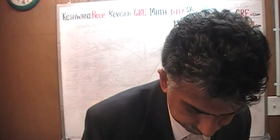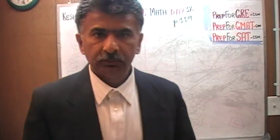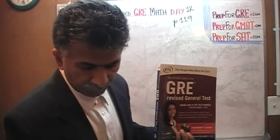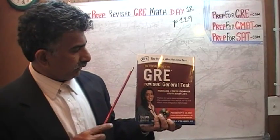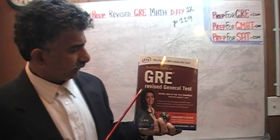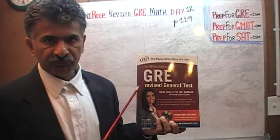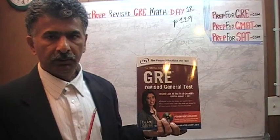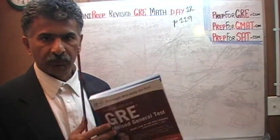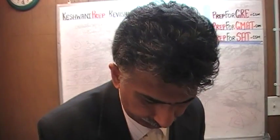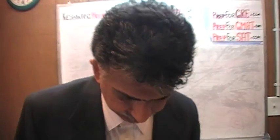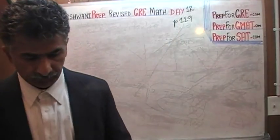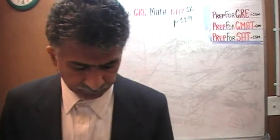We are here because we want to prepare for the math portion of the GRE. We have been solving math problems out of this book here, the official guide to the GRE, the revised general test. If you do not own this book already, purchase one immediately. You are going to need it in order to work with me and follow the work that we are doing together. The problem that we are about to solve is the one you are going to find at the bottom of page number 119, and today is our day number 12. It is a very straightforward, simple problem.